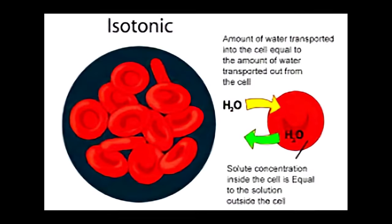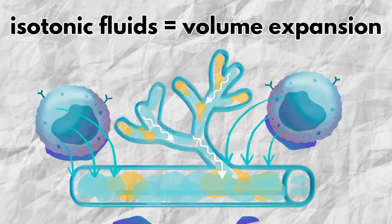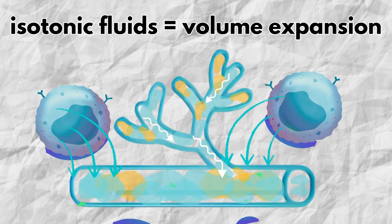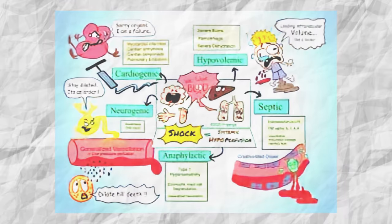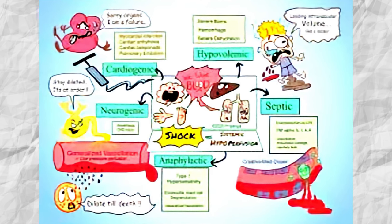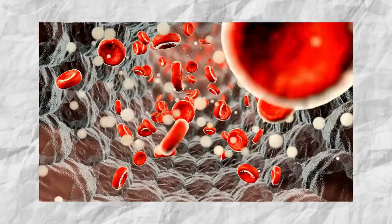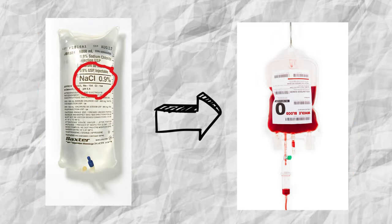Isotonic fluids do not move fluid in or out of the vascular space — they volume expand only. They're generally prescribed to maintain intravascular volume, and solutions like normal saline or lactated ringers are often used for fluid resuscitation in patients with hypovolemic shock, severe bleeding, or circulatory collapse, helping restore blood pressure and perfusion to vital organs. They have similar osmotic pressure to blood plasma, making them compatible with red blood cells and preventing bursting or shrinkage, so they are often the diluent for packed red blood cells.